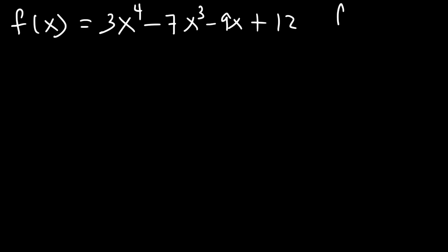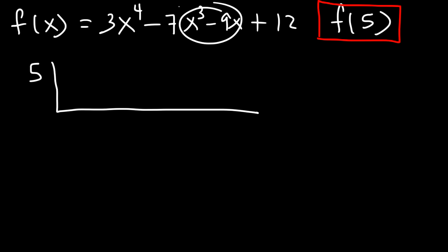So go ahead and evaluate the function when x is equal to 5. Feel free to pause the video. So use synthetic division to get the answer and then confirm it by evaluating the function at x equals 5. So let's start with synthetic division. Now notice that we don't have an x squared term. So we're going to use 0x squared. This means that we need to insert 0 between negative 7 and negative 9. So the coefficients are 3, negative 7, 0, negative 9, and 12.